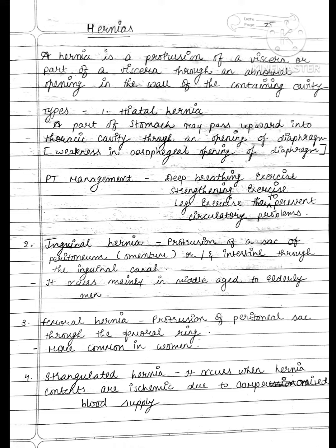Inguinal hernia is a protrusion of a sac of peritoneum or an intestine through the inguinal canal. It occurs mainly in middle-aged to elderly men. Femoral hernia is a protrusion of a peritoneal sac through the femoral ring, and it is more common in women.